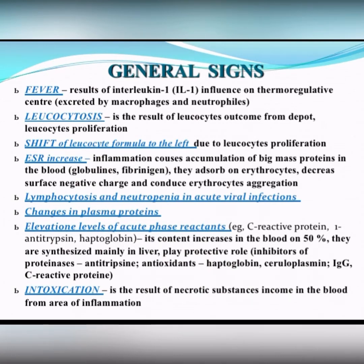In viral infection, we can often observe lymphocytosis and neutropenia. This is usually seen in viral infections. In bacterial infections, usually leukocytosis and shift to the left. Also, we can observe changes in plasma proteins — elevation of levels of acute phase reactants.